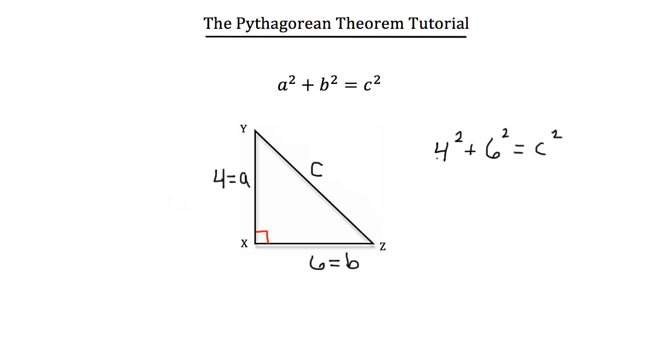Well, 4 squared is 16, and 6 squared is 36, and that's still equal to c squared. So we can add 16 and 36, and get 52, and set that equal to c squared. Now, to solve for c, we'll take the square root of both sides, and that will cancel out the square on c. So you'll get the root of 52 is equal to c.